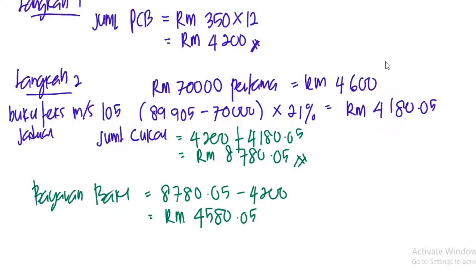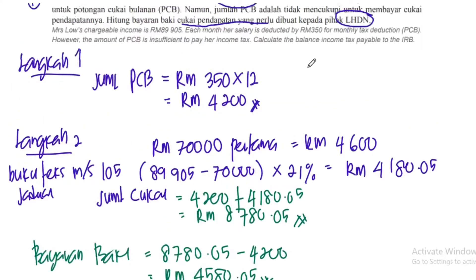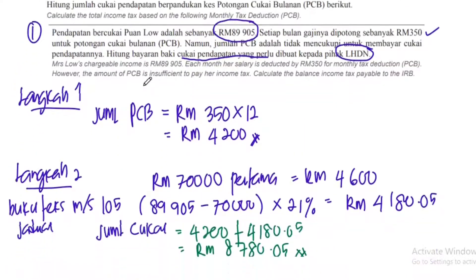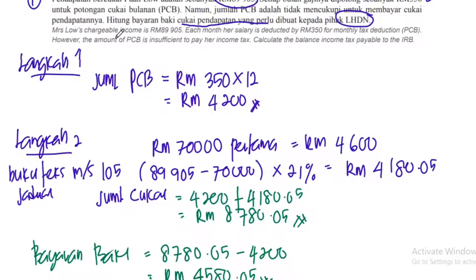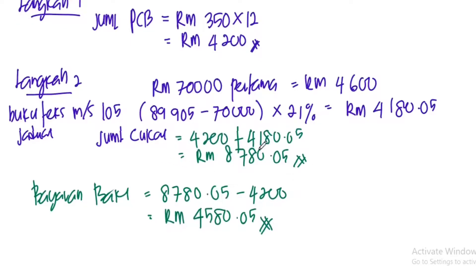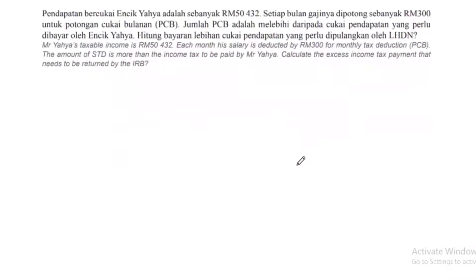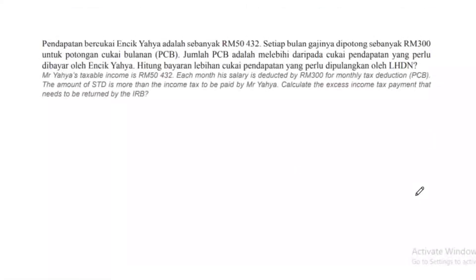RM4,580 ni baki yang perlu dibayar oleh Puan Lau. Maksudnya potongan cukai bulanan ni tak cukup sebab gaji dia besar. Sepatutnya dia bayar cukai banyak ni setahun. Potong gaji dah ada, balance kena bayar kepada Lembaga Hasil Dalam Negeri. Settle untuk soalan pertama. Kita pergi soalan kedua — sama juga langkahnya.